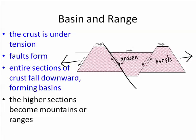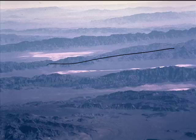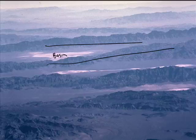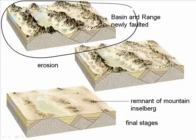Graben and horst, or basin and range. In this photograph, you can see mountain ranges with basins in between, all parallel to each other because tension is pulling the crust apart. In the diagram of basin and range, the top diagram shows newly faulted crust that originally had a horizontal layer, but in the faulting process those horizontal layers became tilted as well as broken.